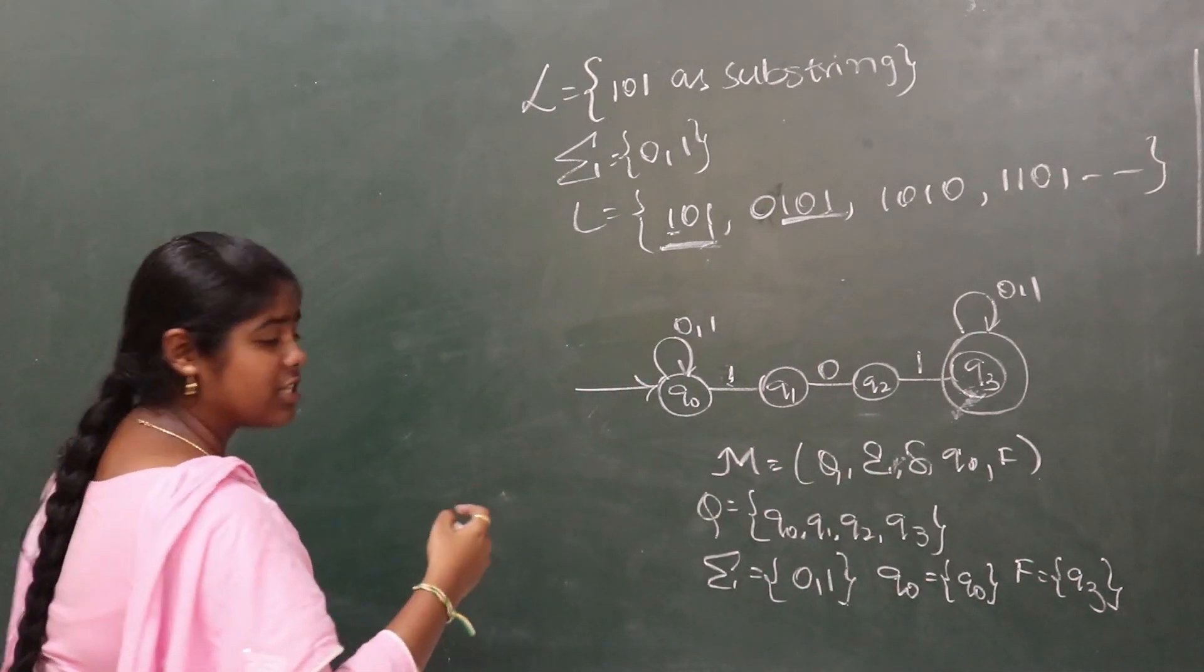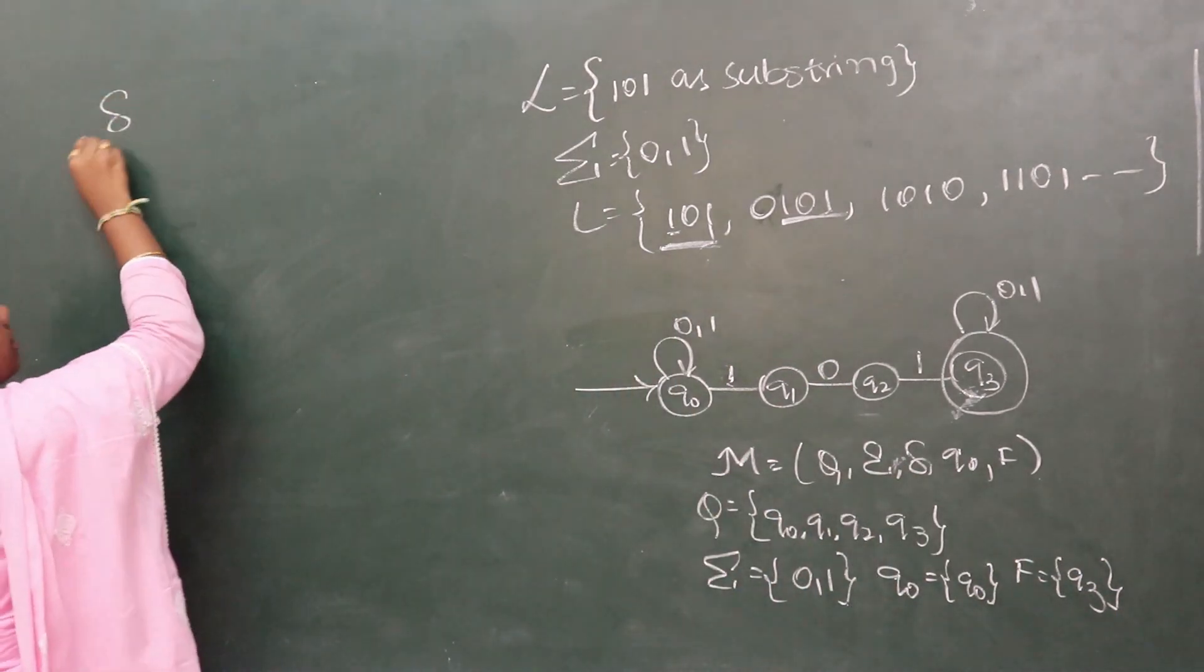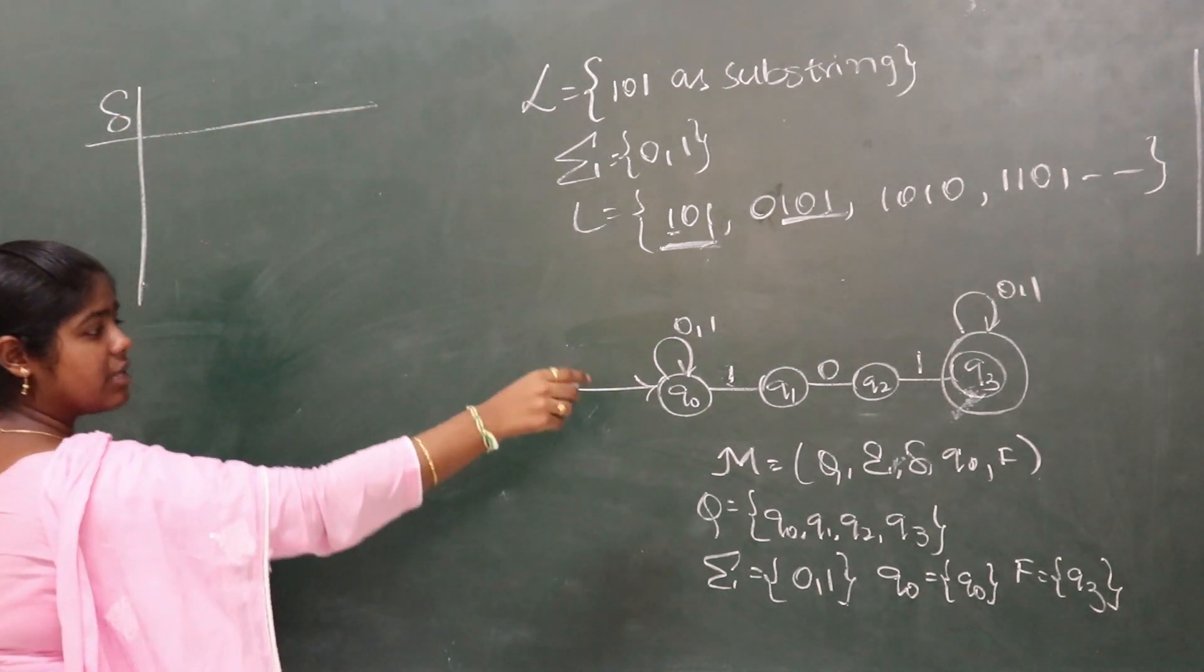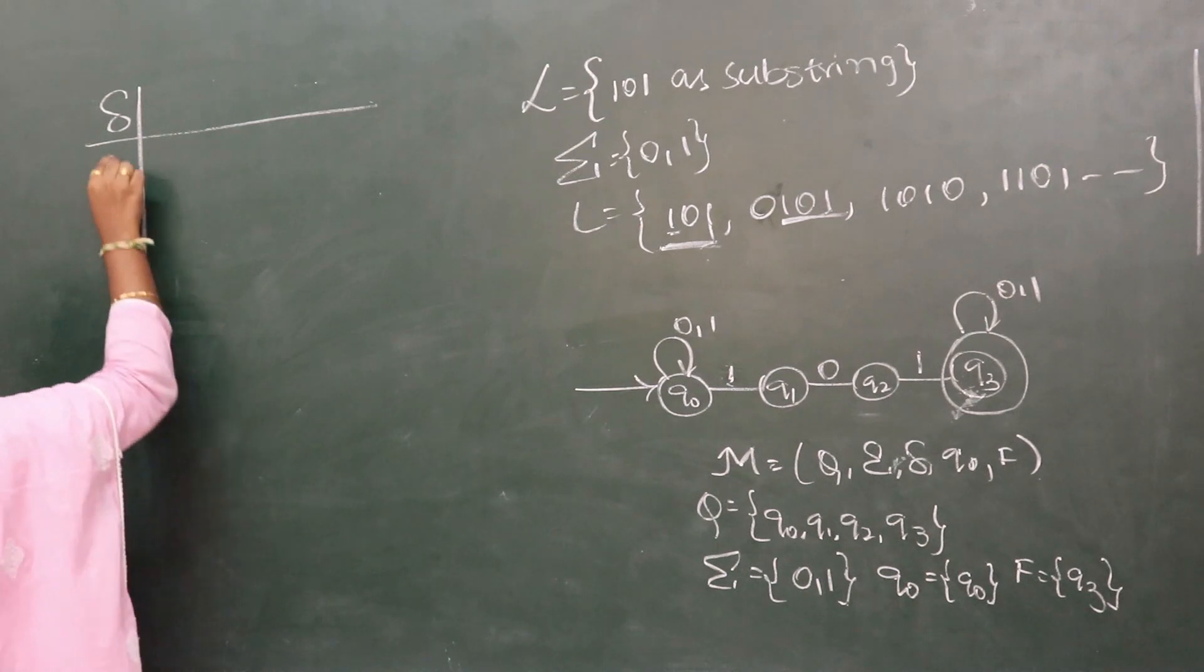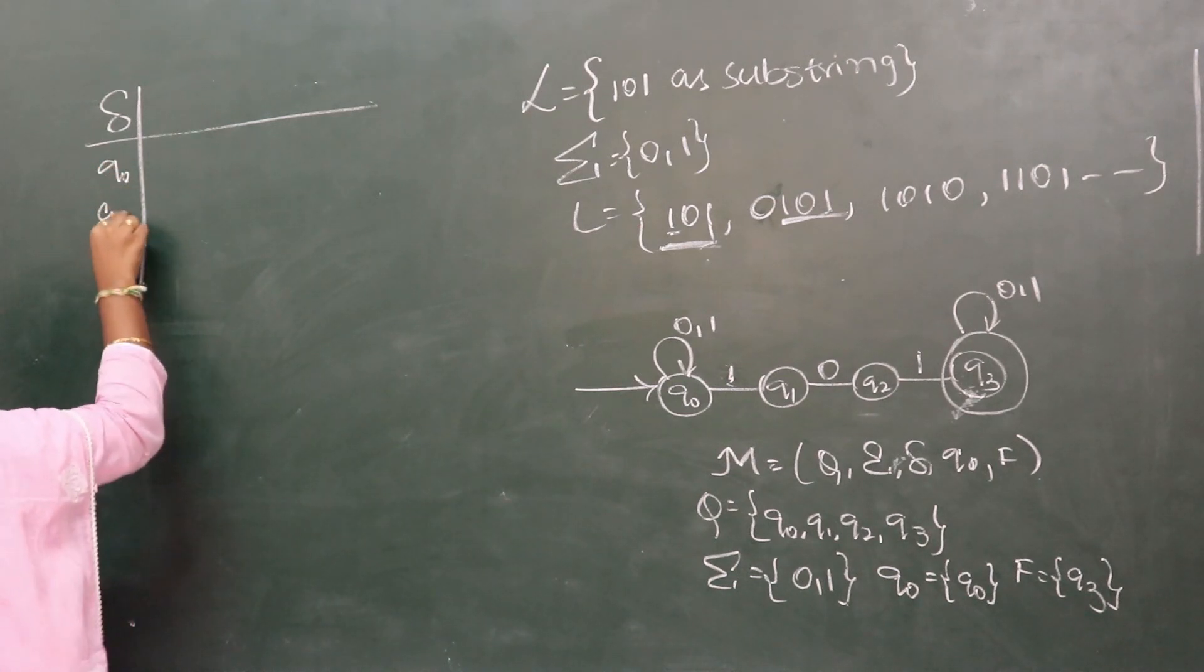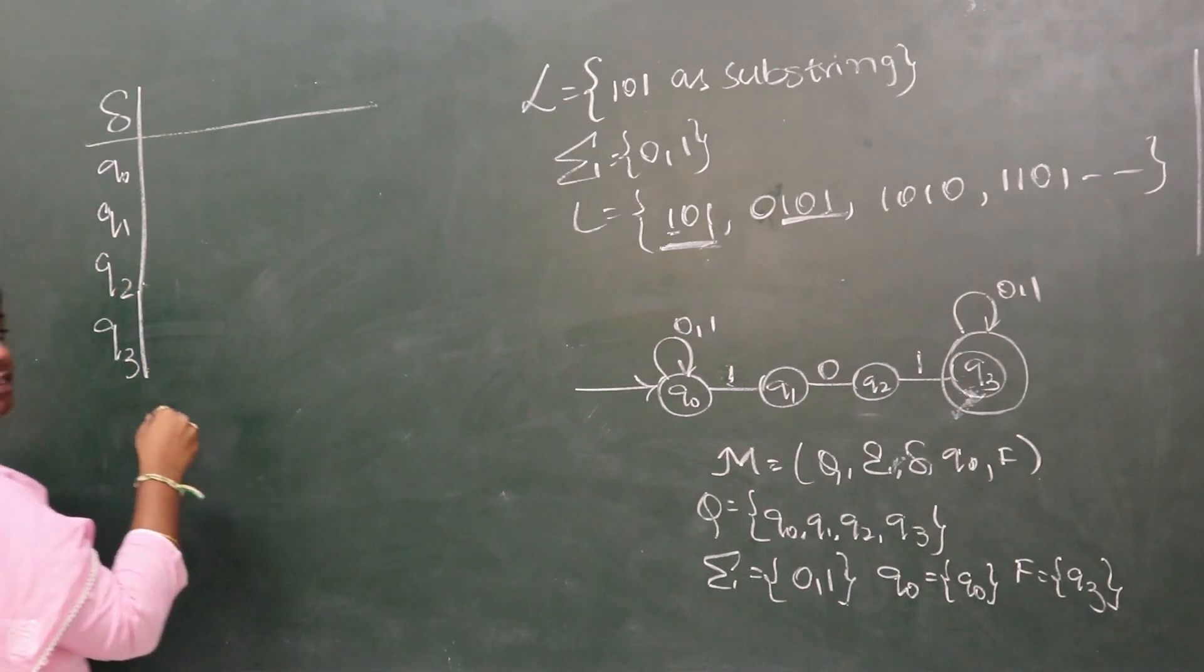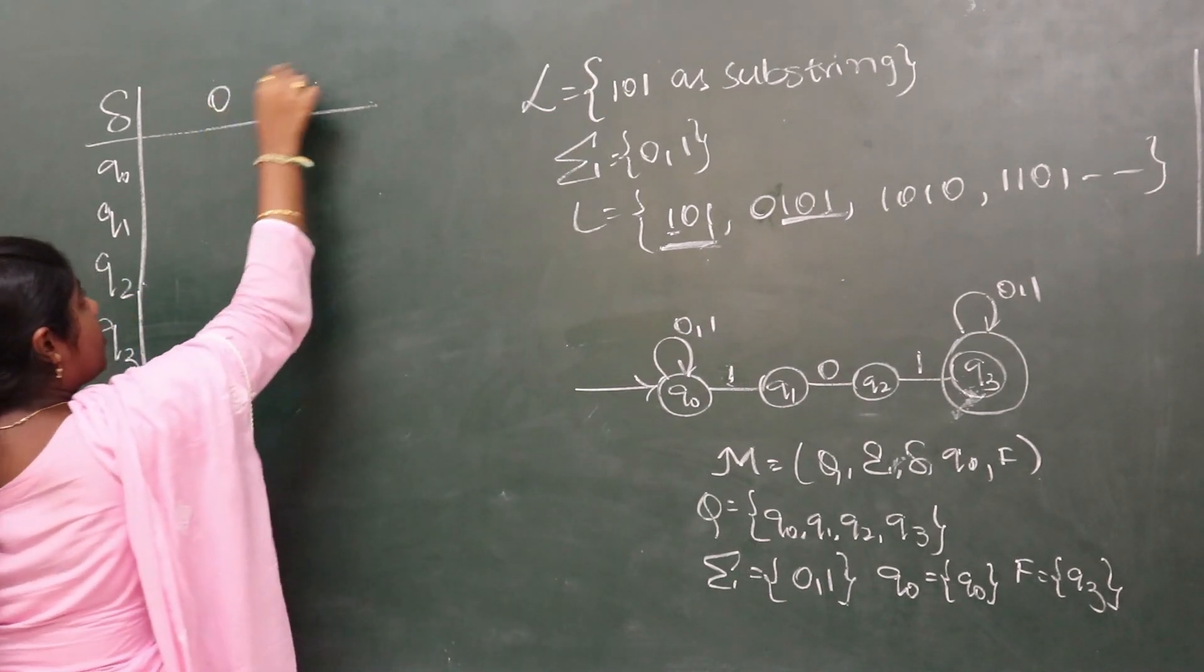Now we need to construct the transition table. Q by sigma - let the set of states come in vertical axis: q0, q1, q2, q3. These are the set of states. Sigma is 0,1.